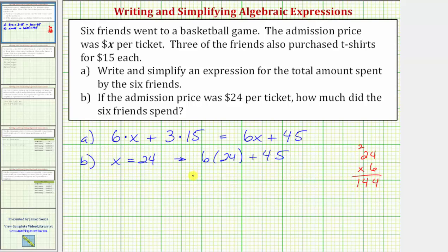The expression equals 144 plus 45, which equals 189. So now we know the six friends spent $189.